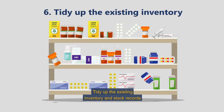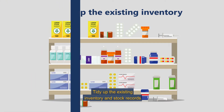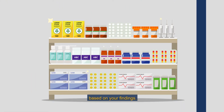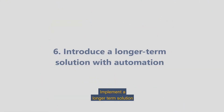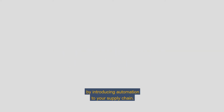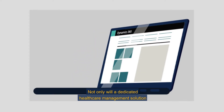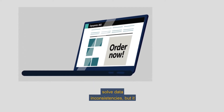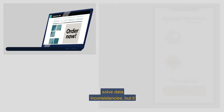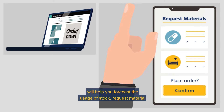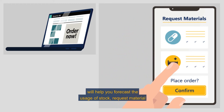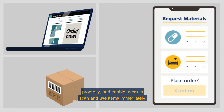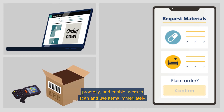Tidy up the existing inventory and stock records based on your findings and implement a longer term solution by introducing automation to your supply chain. Not only will a dedicated healthcare management solution solve data inconsistencies, but it will help you forecast the usage of stock, request materials promptly, and enable users to scan and use items immediately.